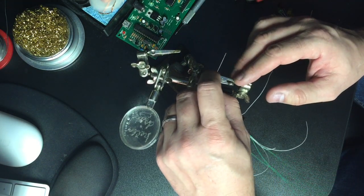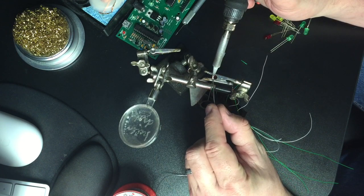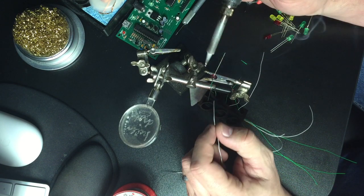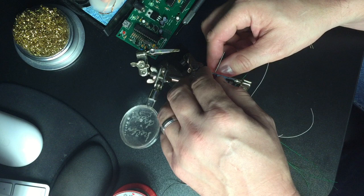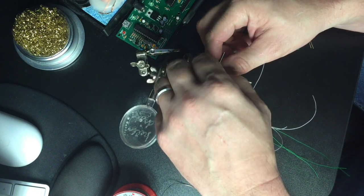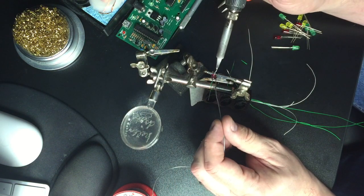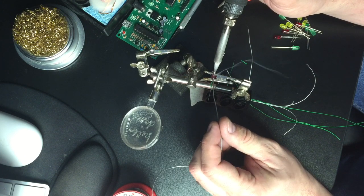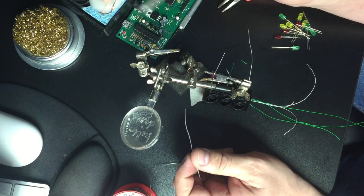So then I bent the leads out, and I used my third hand, my helping hand, to hold it in the alligator clips. And then once I got the wire, the green wire, to the positive side, I just gave it a dab of solder. And then the white wire to the negative side, and gave that a dab of solder.